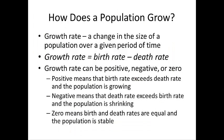So how does a population grow? The growth rate is basically a change in the size of a population over time. You find it by taking the birth rate and subtracting the death rate. This growth rate can either be positive, negative, or zero — positive if the population is growing, negative if it's shrinking, and a zero growth rate means that births and deaths are equal and the population is stable.